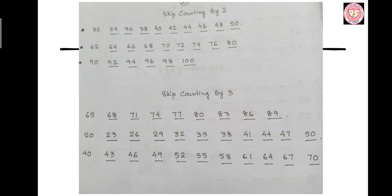Now skip counting by 3. We add 3 to get the next number and we do not count the in-between numbers. In skip counting by 3s, we get both even and odd numbers. The digit in the 1's place is increasing by 3. Skip counting by 3s is counting every third number — do not count the in-between numbers.